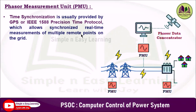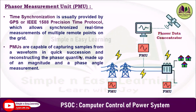IEEE 1588 Precision Time Protocol allows synchronized real-time measurement of multiple remote points on the grid. It is a standard for synchronizing clocks on a network with sub-microsecond accuracy, and it distributes time and frequency information over a packet-switched Ethernet network.